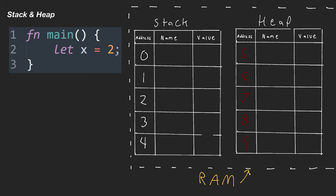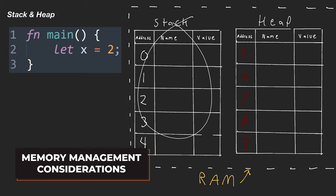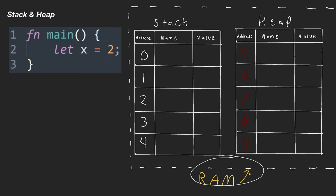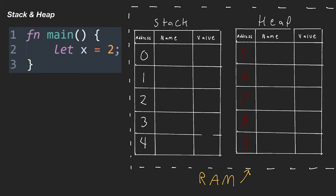On my screen you can see that I have a stack and a heap, and I'm indicating that these are all part of RAM, which is random access memory. I'm also going to have a few examples on the left-hand side of my screen that we'll walk through as we go through this video. The first thing to talk about is what I mean by memory management and the considerations you may have when writing and reading information from RAM.